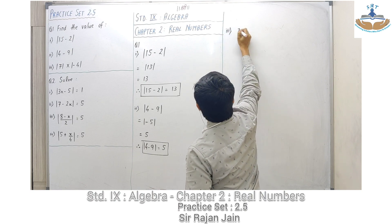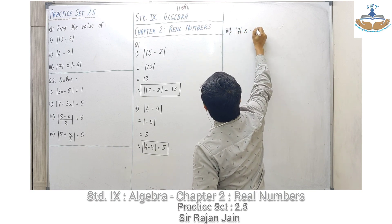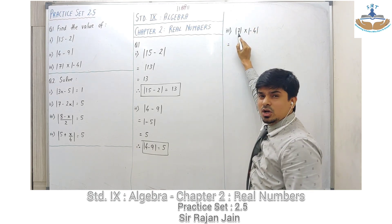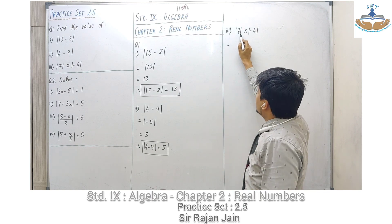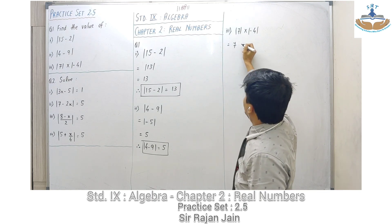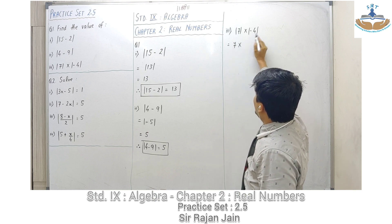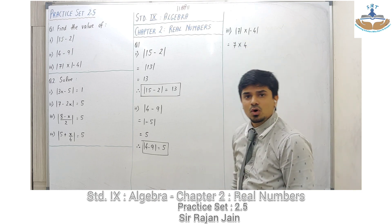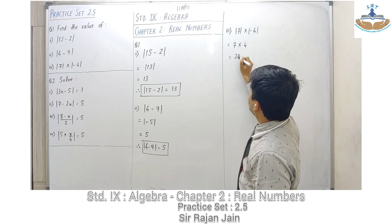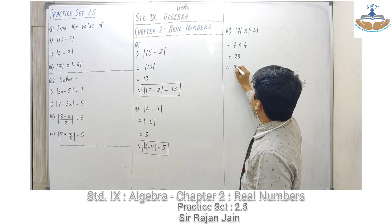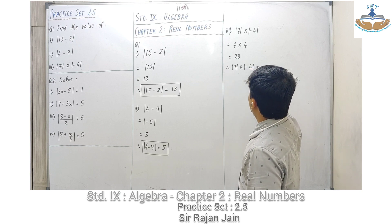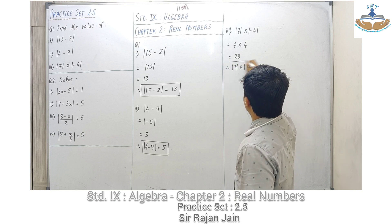Part three: mod of 7 multiplied by mod of minus 4. Modulus is already operating on a single number in each case. Mod of 7 stays 7 since it is positive, and mod of minus 4 becomes 4 since the negative number is made positive. So 7 into 4 equals 28. Therefore mod of 7 into mod of minus 4 is equal to 28.